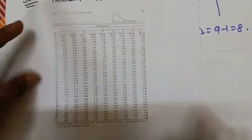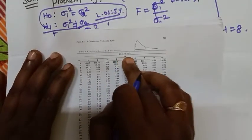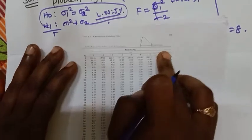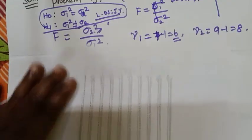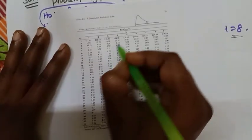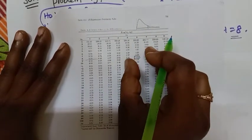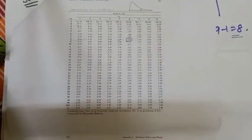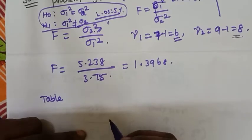We use the 5% F-table. V1 is the first degrees of freedom and V2 is the second degrees of freedom. First degrees of freedom is 6, second degrees of freedom is 8. We have V1=6 and V2=8 as the two intersecting points. The table value at 6 to 8 is 3.58.